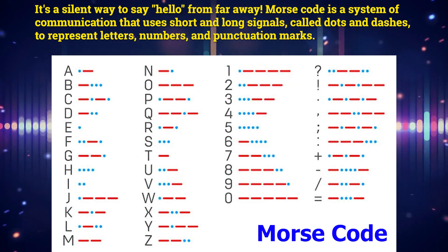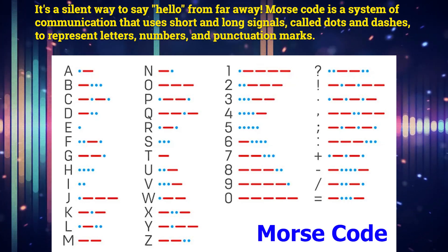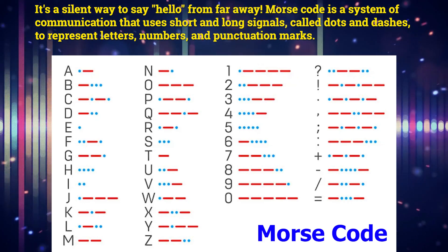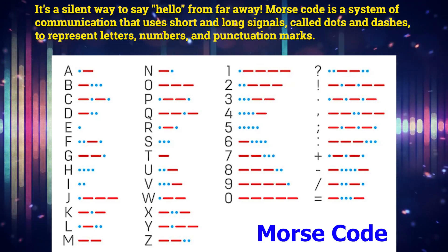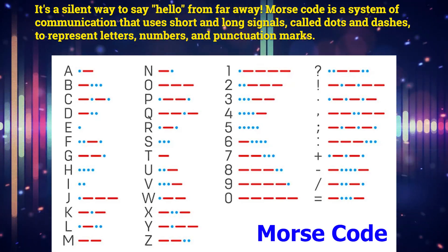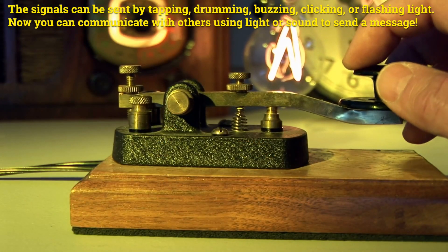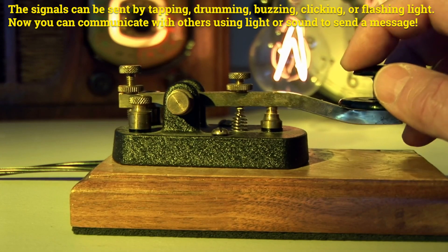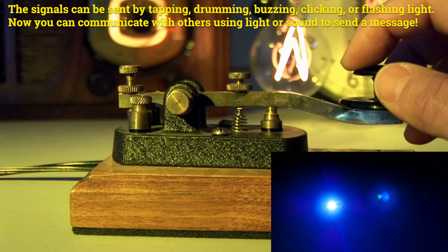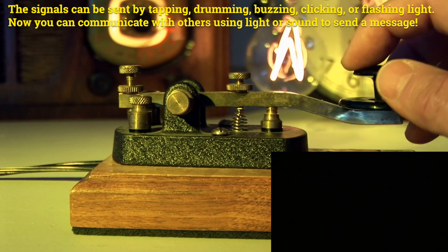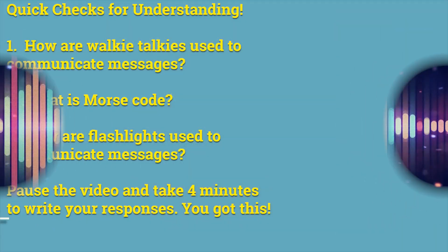Morse code is a system of communication that uses short and long signals called dots and dashes to represent letters, numbers, and punctuation marks. The signals can be sent by tapping, drumming, buzzing, clicking, or flashing light. Now you can communicate with others using light or sound to send a message.